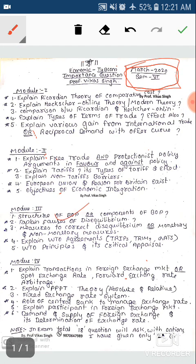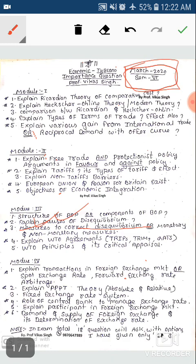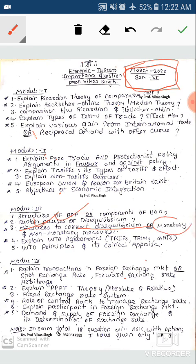Module 3: One important question is the structure of balance of payment and components of balance of payment. You'll cover current account balance and capital account. Then there's causes of disequilibrium - very important. And measures to correct disequilibrium. Sometimes they ask monetary measures or non-monetary measures separately, so read both.